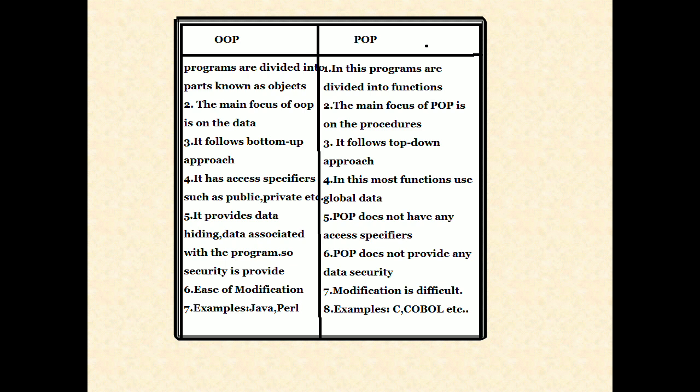OOP has access specifiers such as public and private. In POP, most functions use global data. OOP provides data hiding, so data security is provided. POP does not have access specifiers and does not provide data security. OOP has ease of modification, whereas modification in POP is very difficult. OOP programming examples are Java, Python, etc. POP programming language examples are C, COBOL, etc.